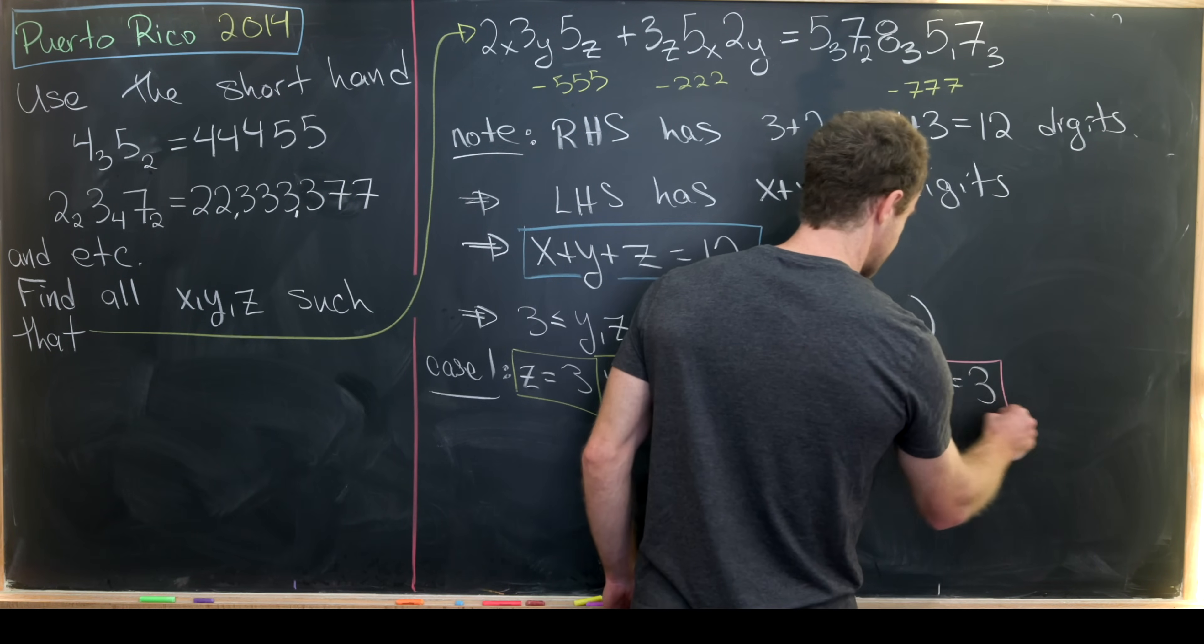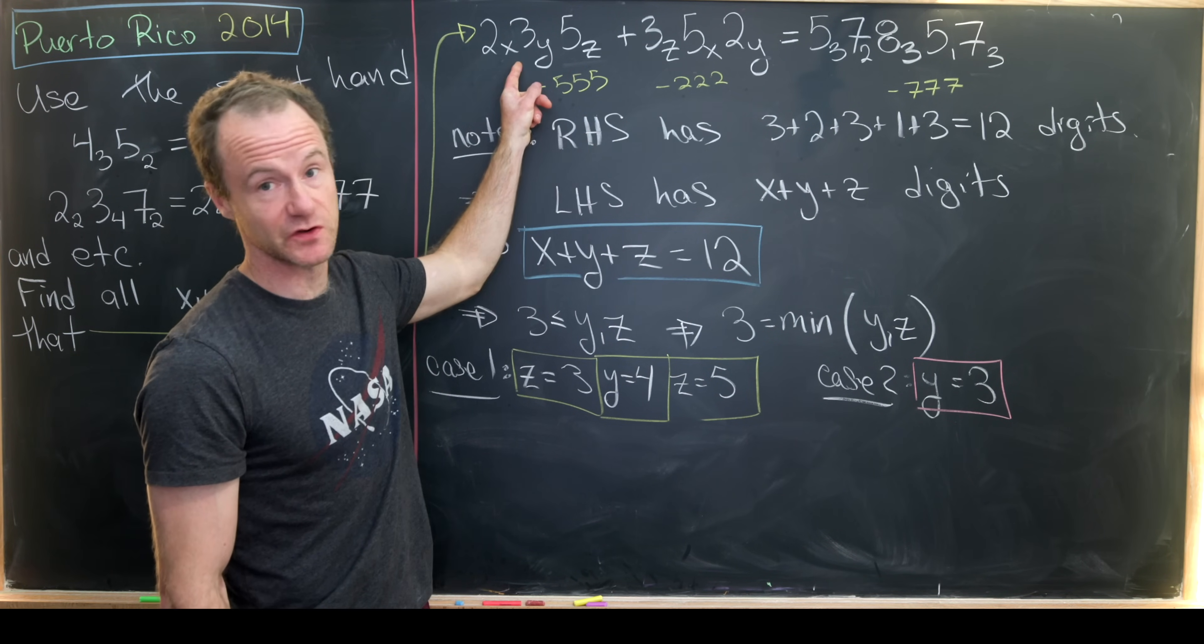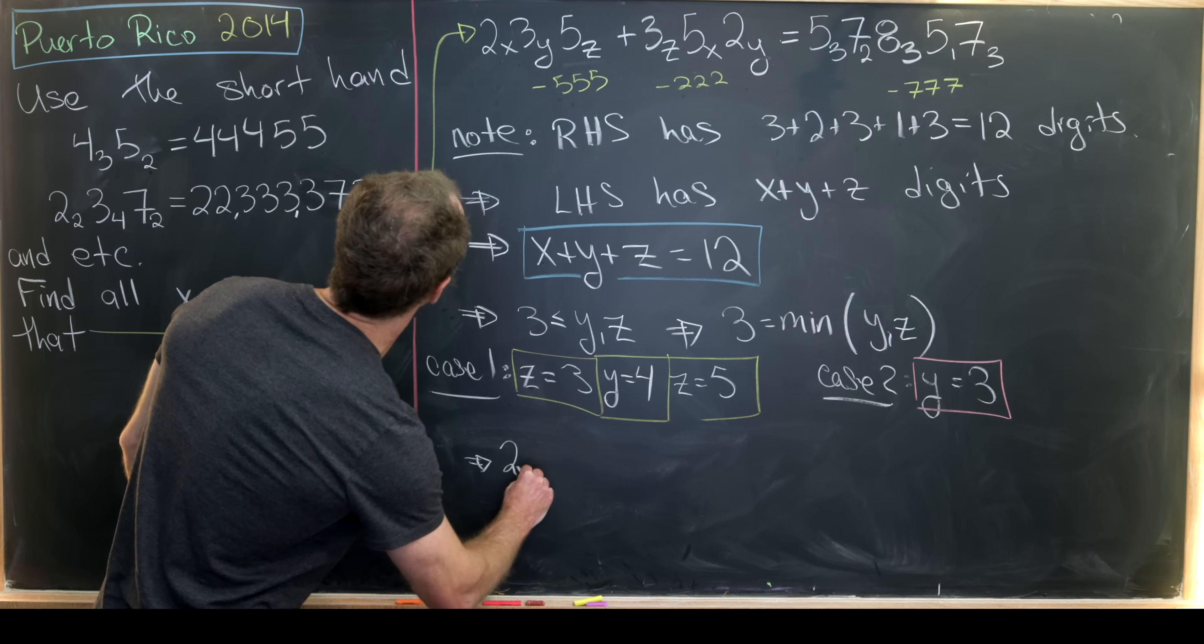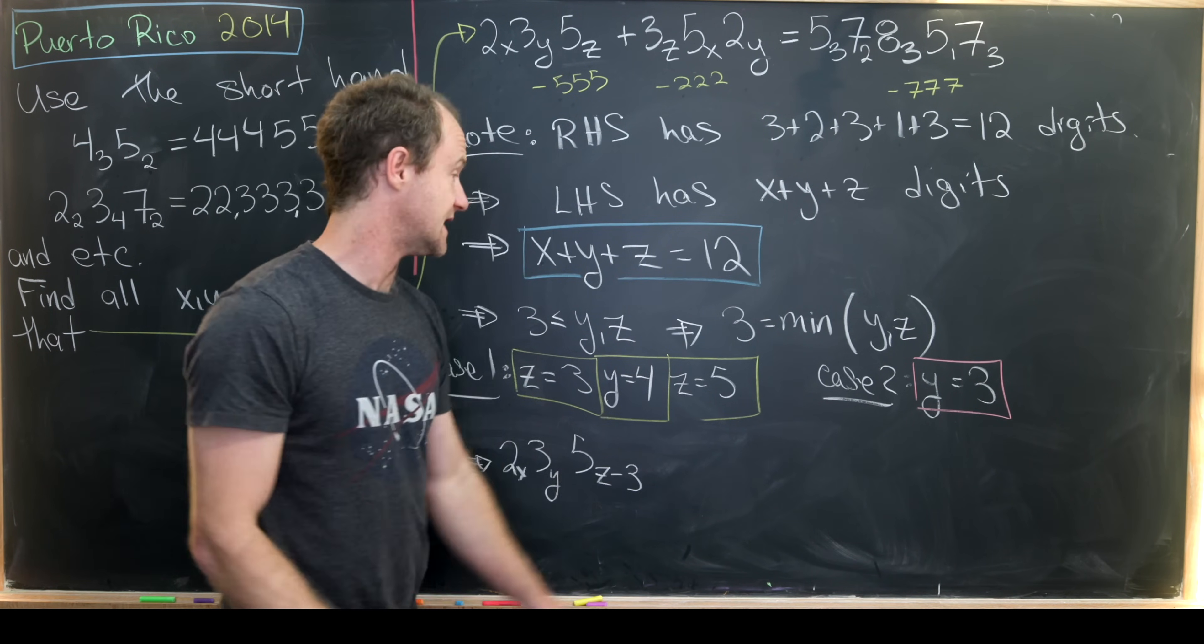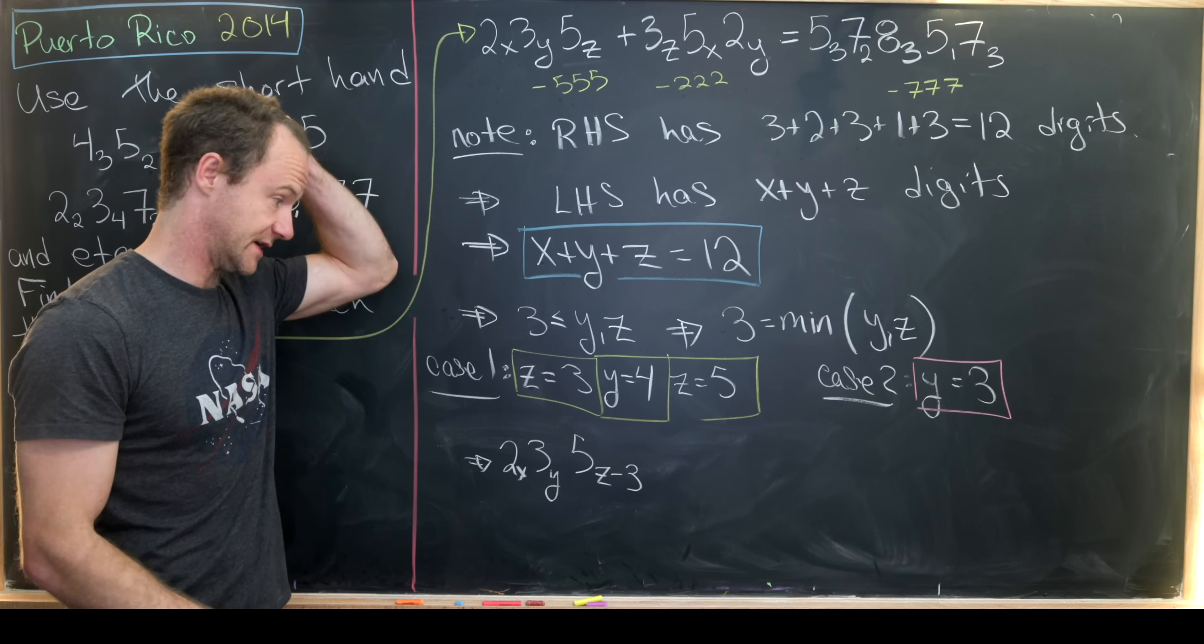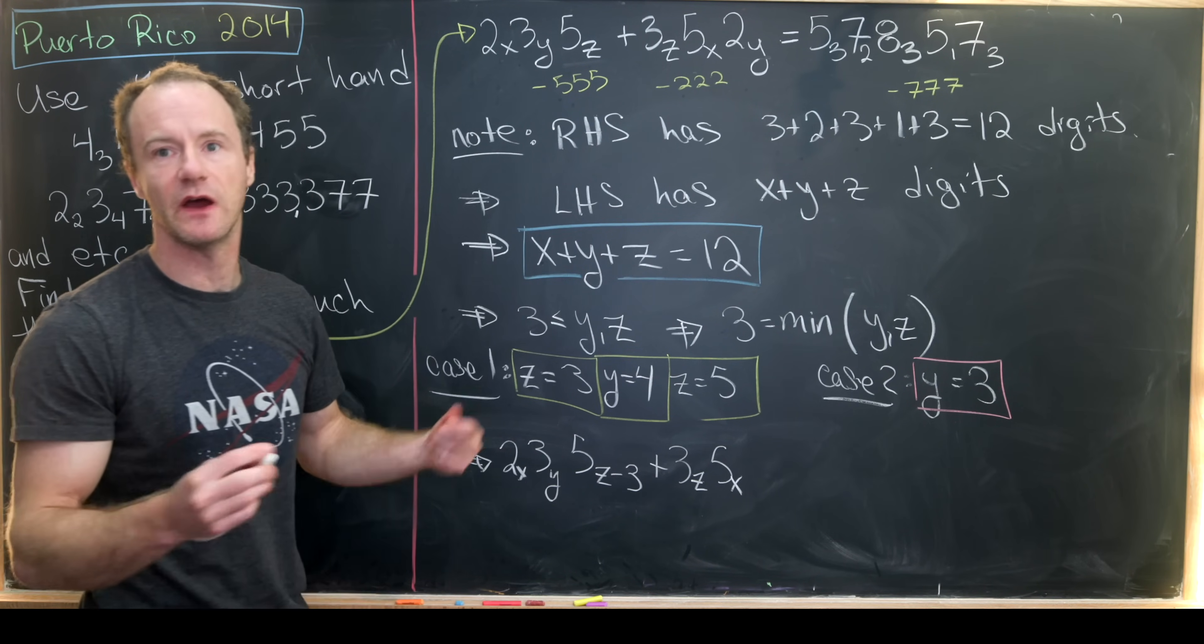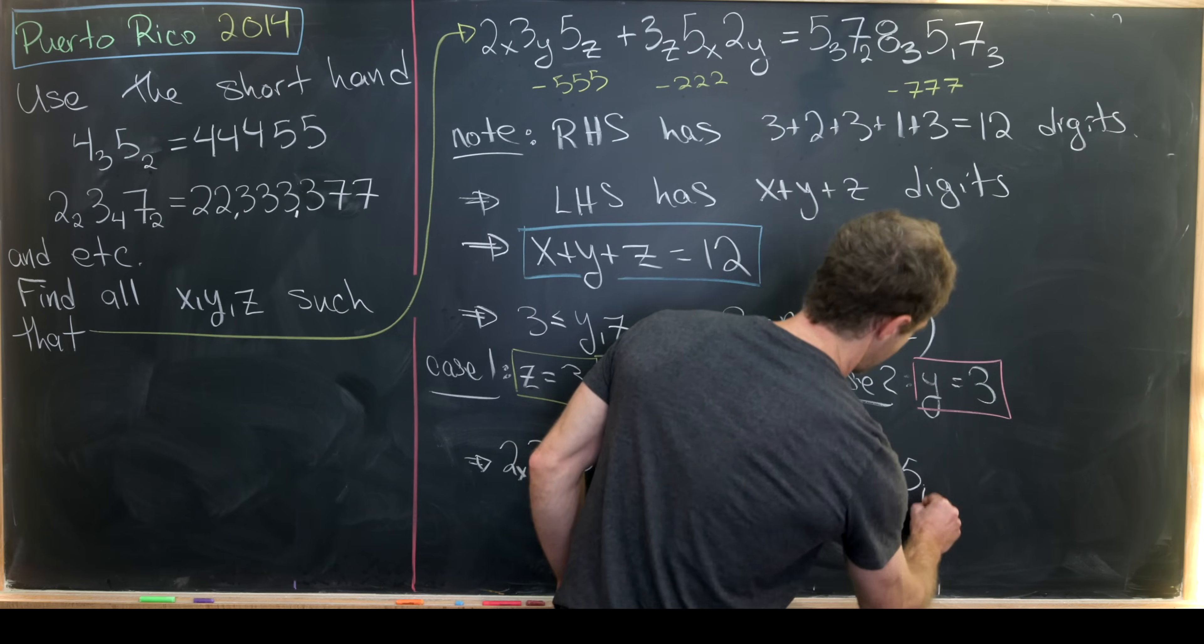Now we're going to look at the second case when y is equal to 3. We'll do the same thing that we did before. We'll subtract 555 and 222 from this first sum and the second sum, and subtract 777 from the right-hand side of the equation, and then we'll clear the zeros. That's going to leave us with 2 sub x, 3 sub y, and then 5 sub z minus 3. Remember in this case z is bigger than or equal to y given the fact that y is achieving this minimum value of y and z. For this second term we'll have 3 sub z, 5 sub x, we took out that 2 sub y by subtracting 222 and then dividing by a thousand, and then over here we have 5 sub 3, 7 sub 2, 8 sub 3, 5 sub 1.